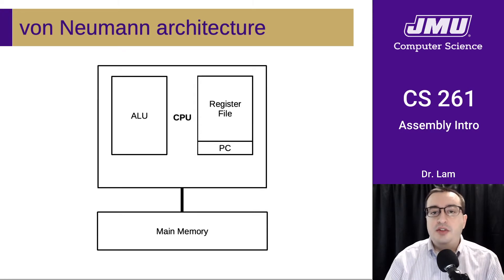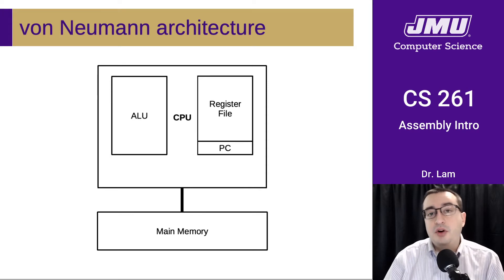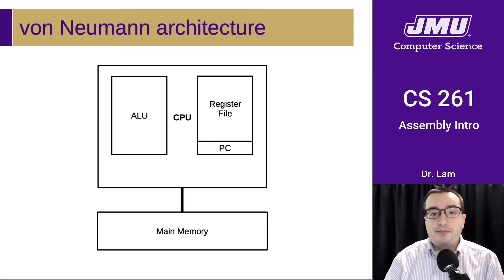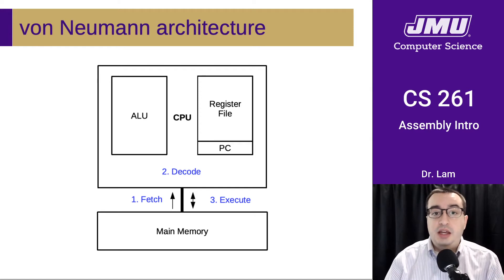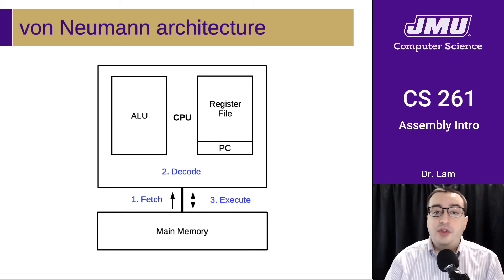There are three major phases to the von Neumann cycle — and we'll learn later this semester that some architectures have more phases than that. The main cycle is: first, the CPU fetches the next instruction from memory. Once it's there, it decodes that instruction to figure out what it's supposed to do. Then it executes the instruction, which may involve reading more data from memory, changing registers, or writing data back to memory. This process repeats over and over until the program is done.